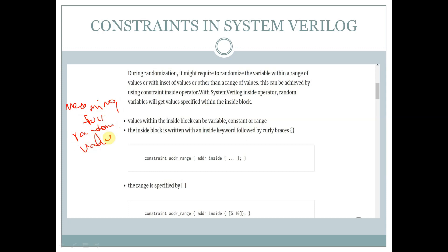Constraints help in generating meaningful random values. Constraints help us to generate a range of values, a set of values, or values other than a range. This is achieved by the constraint inside operator. With the inside operator, random variables will get values specified within the inside block.